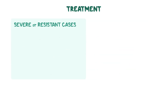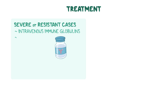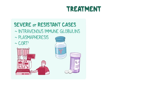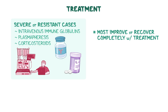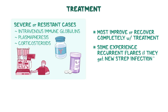For severe or resistant cases, immune therapies such as intravenous immune globulins, plasmapheresis, or corticosteroids may be considered, but these are reserved for specialized centers. Most children improve or recover completely with treatment. However, some may experience recurrent flares if they get new strep infections, so close monitoring is important.